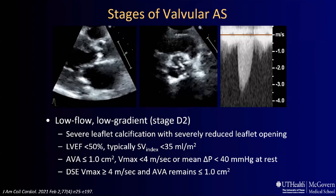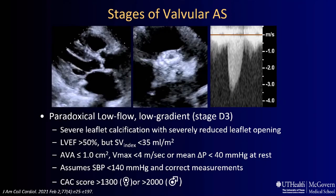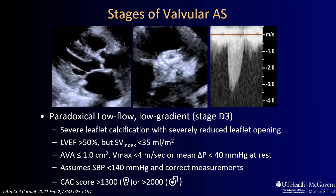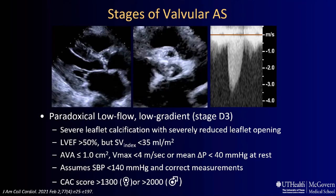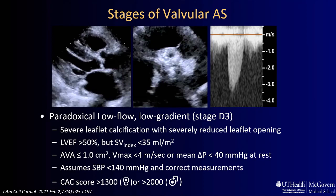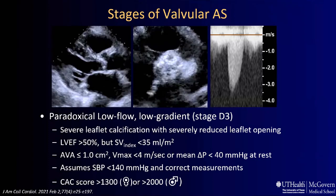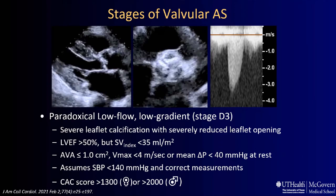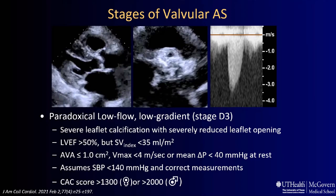The third stage of symptomatic severe AS is paradoxical low-flow, low-gradient. These are patients with preserved ejection fraction but reduced stroke volume — still with a stroke volume index of less than 35 mL/m². This could be due to a small ventricle or coexisting mitral or tricuspid regurgitation, which decreases the forward stroke volume. A way to differentiate patients with truly severe aortic stenosis in this situation is to utilize the calcium score by cardiac CT: more than 1,300 for females and 2,000 for males, as recommended by the guidelines.